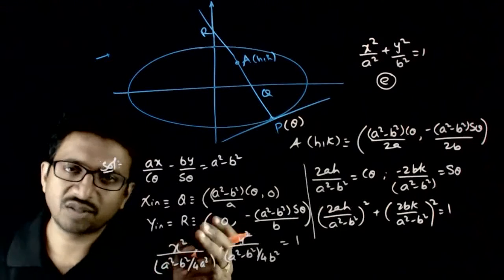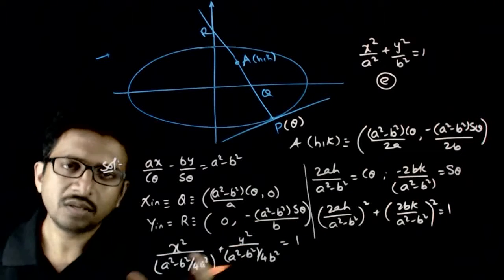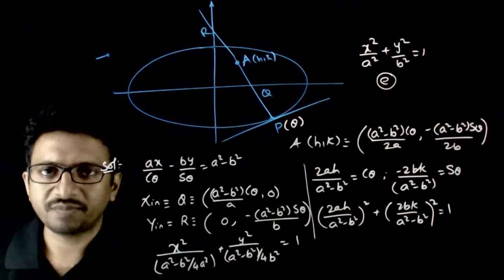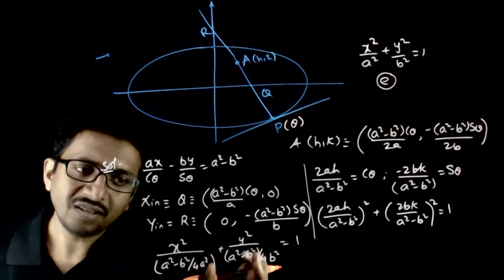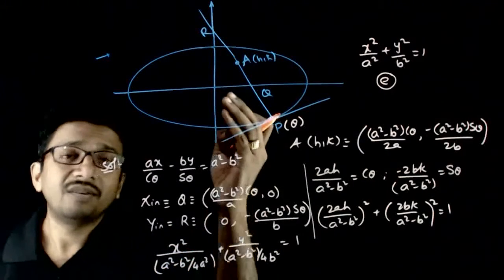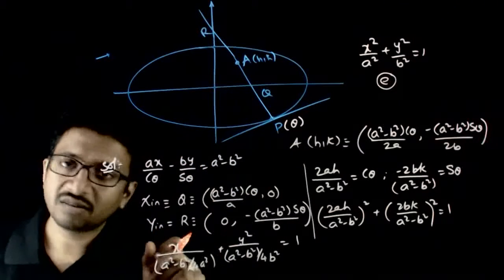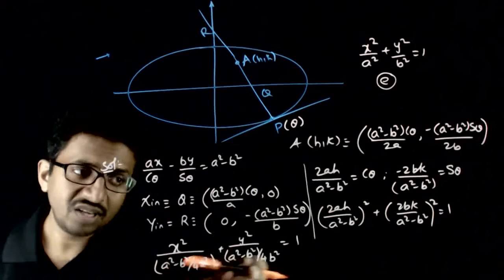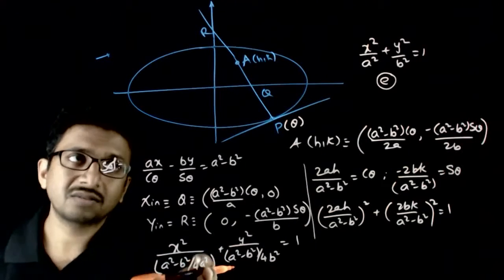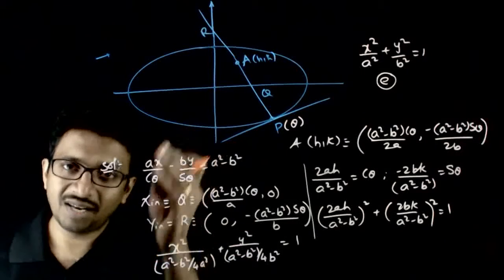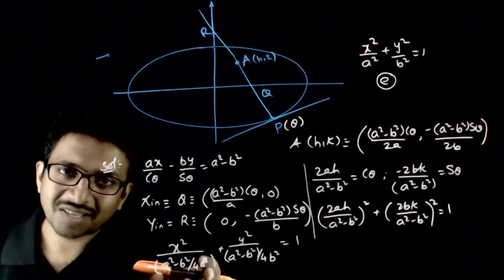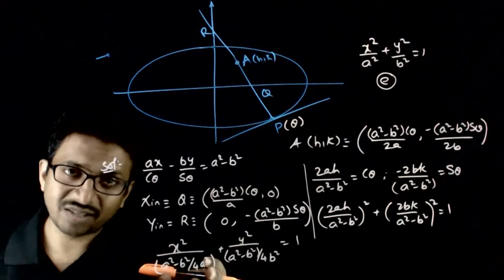Obviously, this is an ellipse again — x² over some number plus y² over some number equals 1. What is the eccentricity of this ellipse? For the original ellipse, we assumed a is larger. For this new ellipse, the number below y² is larger and the number below x² is smaller — so this is a vertical ellipse.